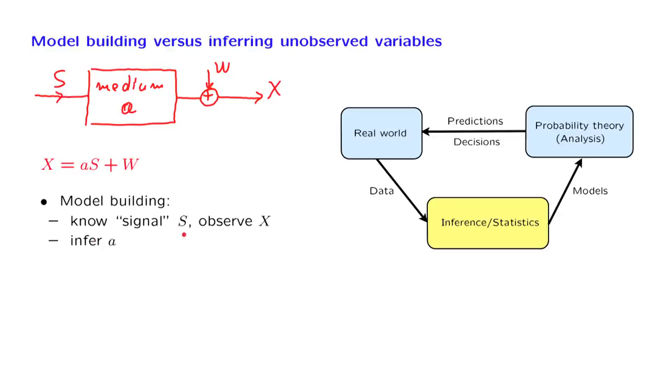We observe x, and then using this equation, and knowing that w is random noise coming from some distribution, we try to make an inference about the variable a. So this is an instance of model building - we are trying to make a model of the medium that's involved.